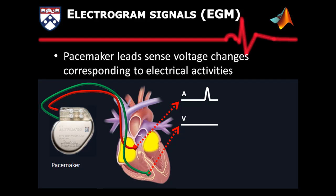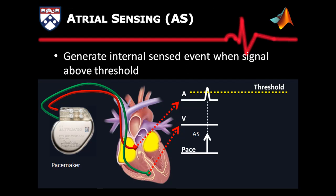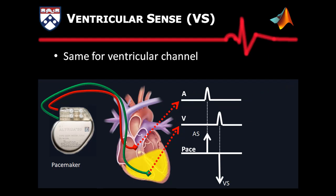Let's now look at the operation of a dual chamber pacemaker which has two leads inserted into the heart. The pacemaker leads sense the electrical activity of the heart tissue. The signals sensed by the leads are referred to as electrical signals. Once the voltage crosses the sensing threshold, an atrial sense event is triggered in the pacemaker software. It is the same for the ventricle channel.